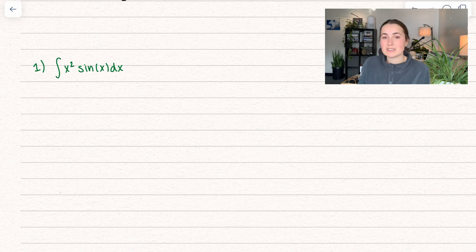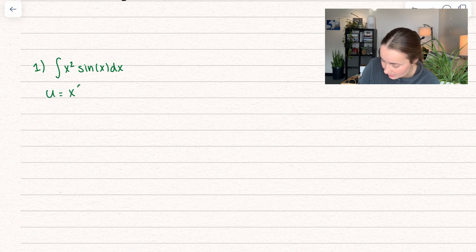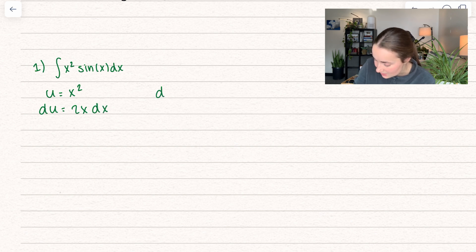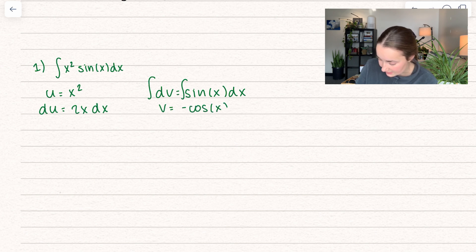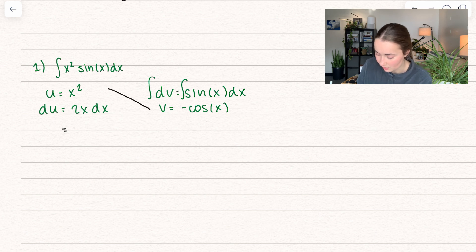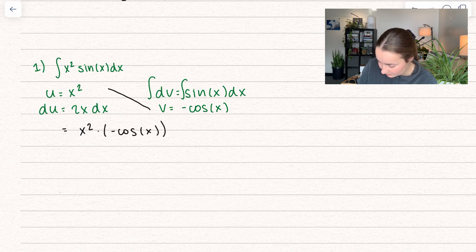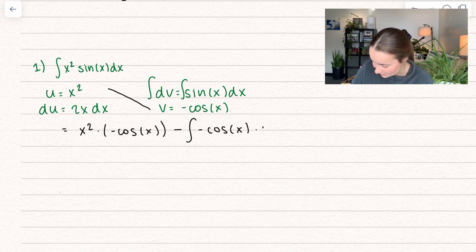You want to set u equal to something that will go away or differentiate down to a constant. I'm not going to do sine of x because then you'd just be going in the sine-cosine circle forever. So instead I'm going to set u equal to x². Taking the derivative of both sides gives du equals 2x dx. Now I know what dv is — the remainder — so dv equals sine of x dx. Taking the antiderivative of both sides gives v equals negative cosine of x. So applying the formula — uv rays — x² times negative cosine of x, shooting at voodoo: negative cosine of x times 2x dx.